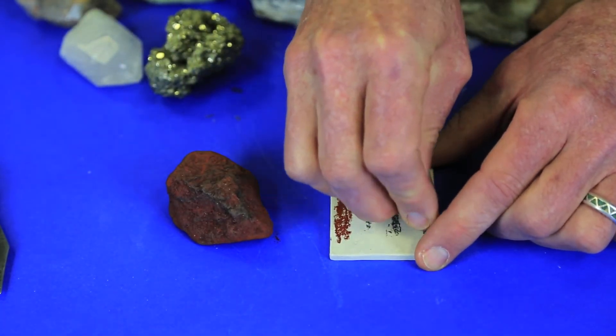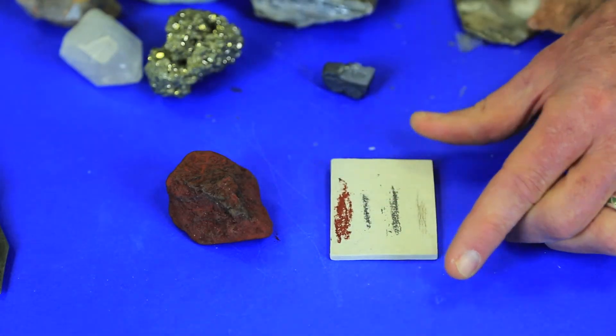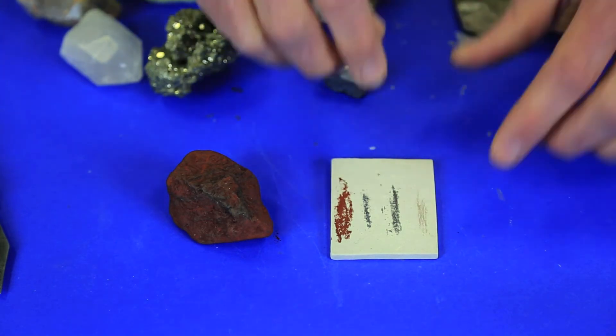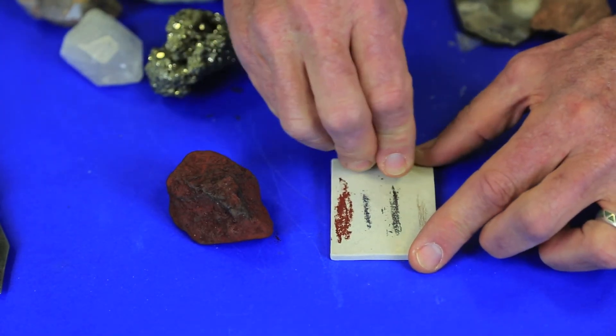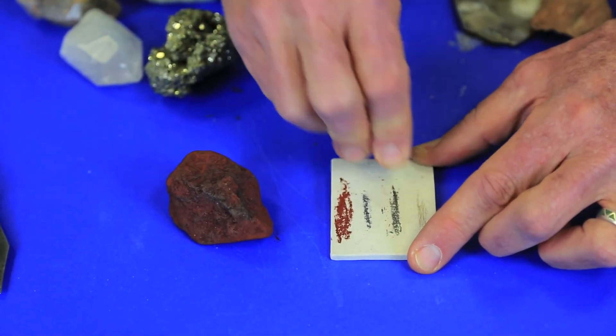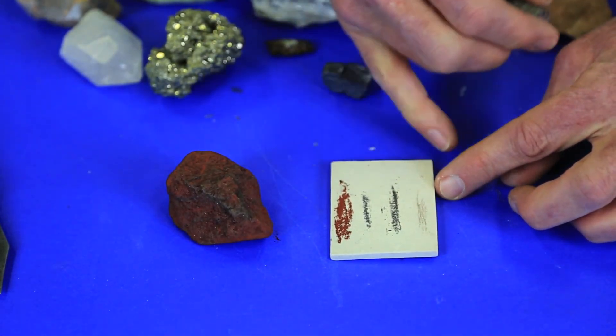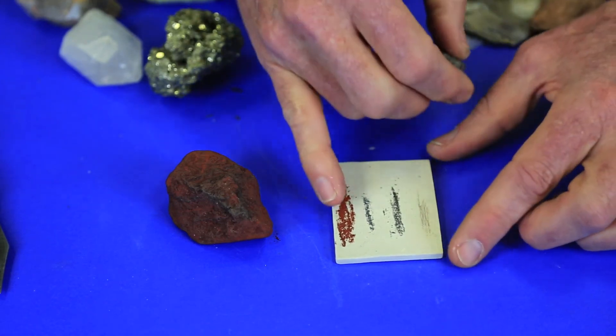Now one more caution similar to the glass plate caution. If your mineral is harder than the streak plate, you can scratch the streak plate and leave a powder of white porcelain tile behind. It will look like a white streak. So again, see if you can wipe the streak away and pay close attention to what you're doing with this test.